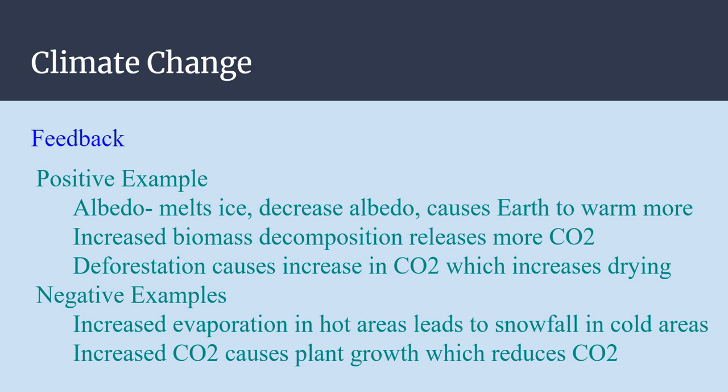Positive feedback example of climate change would be albedo. Warmer weather melts ice. This decreases the reflection of heat radiation, solar radiation, which then causes the earth to warm up even more and more ice melts. And so the cycle goes on and on. We could look at negative examples. And so if you have increased CO2, this causes more plant growth, which then reduces the CO2 and gets you back to where you began.